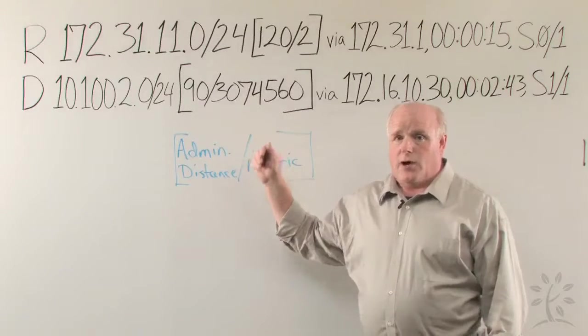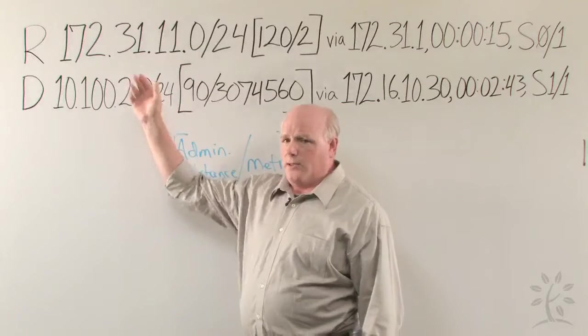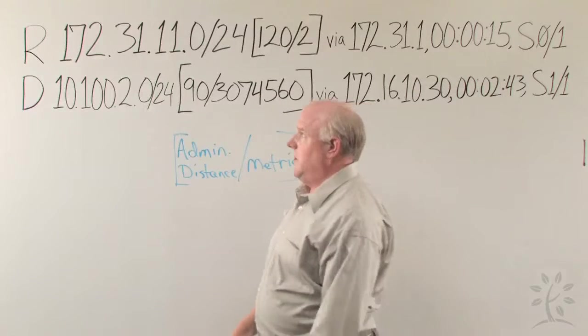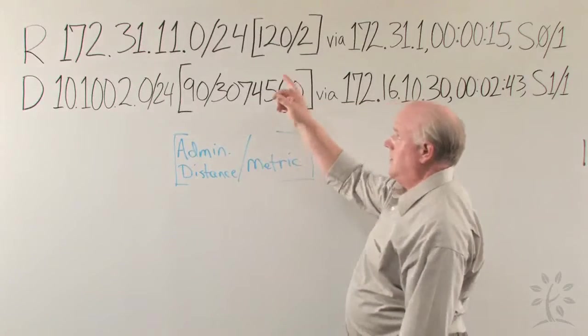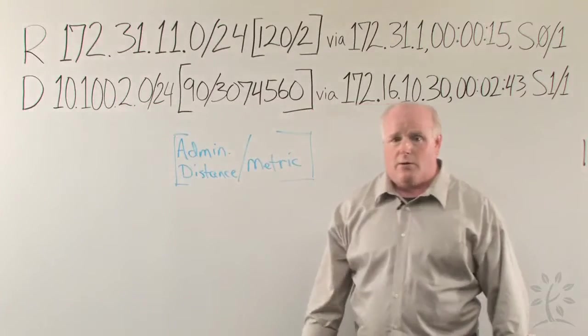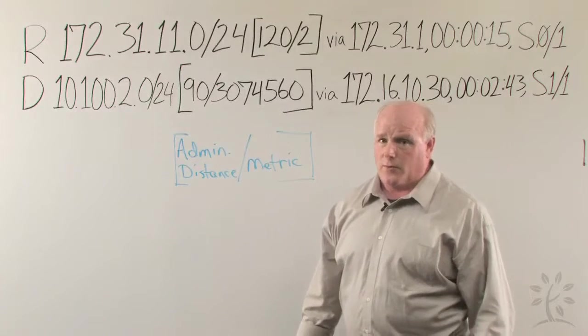This is output from a show IP route command. Let's focus on the top line right now, because these two lines probably wouldn't appear together in most routing tables. But as an example, let's take the first route we see comes from a RIP table. R stands for the routing information protocol, and that's the protocol you're probably most familiar with right now.